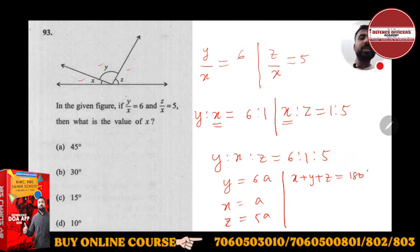What I did was merge the two ratios. To merge ratios, the common element should be the same. Here x is common, and it's already the same - first ratio has x as 1, second ratio has x as 1, so I directly merged them to get y is to x is to z as 6 is to 1 is to 5.